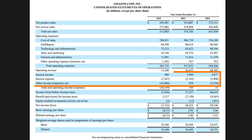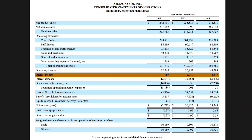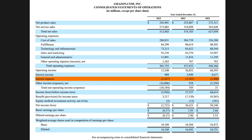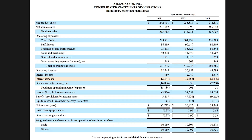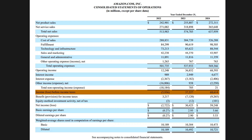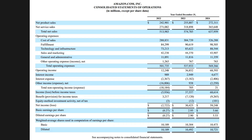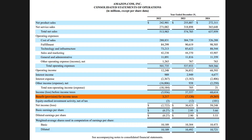Continuing down the income statement, we have the interest section. There is interest income — money coming in, typically from investing excess cash into marketable securities or money market funds. Then there's interest expense, which is primarily the interest paid on outstanding debt. Finally, there's other income, a catch-all bucket, which takes us to income before taxes — also known as EBT, earnings before taxes.